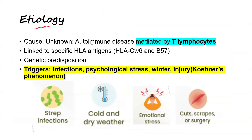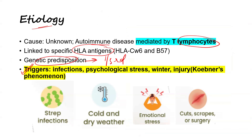Coming to the etiology, the exact cause is unknown, but it is believed to be an autoimmune disease mediated by T-lymphocytes. It is linked to specific HLA antigens and there appears to be a strong genetic predisposition — up to one third of affected individuals have a family history of psoriasis. The main triggers include infections, psychological stress, cold and dry weather, and physical injury.